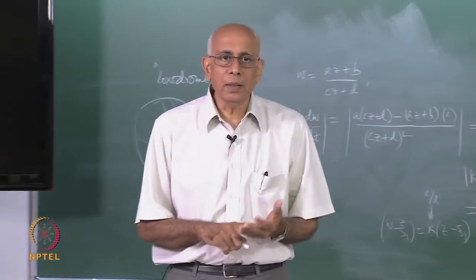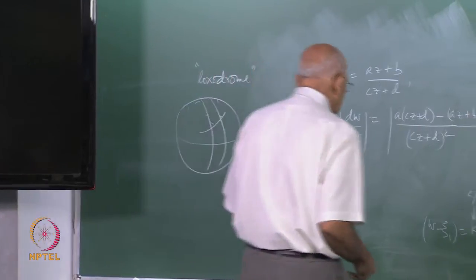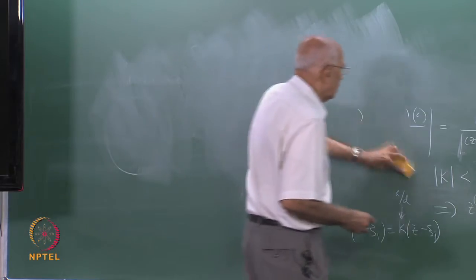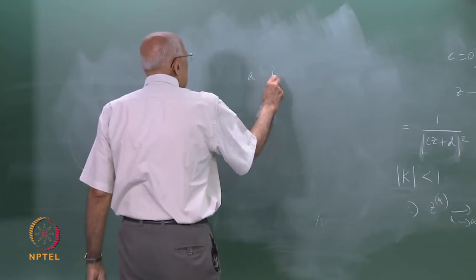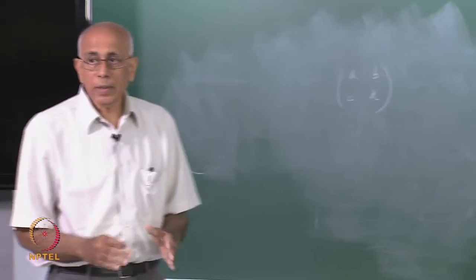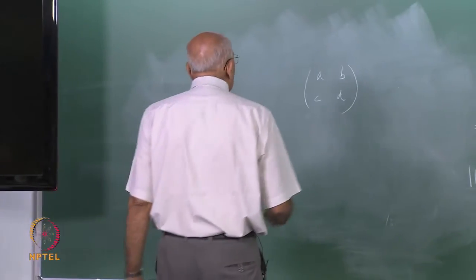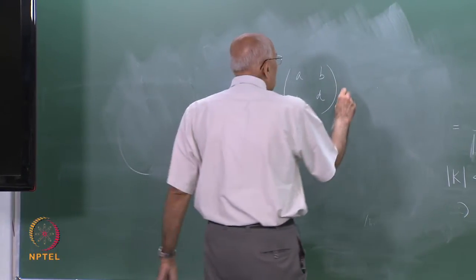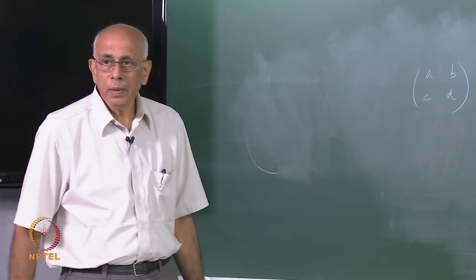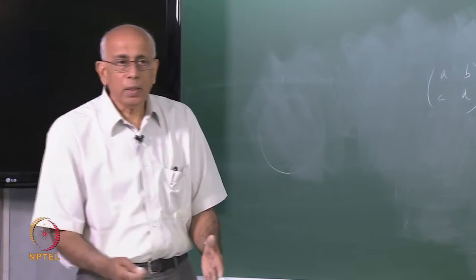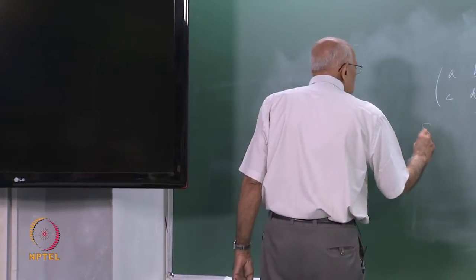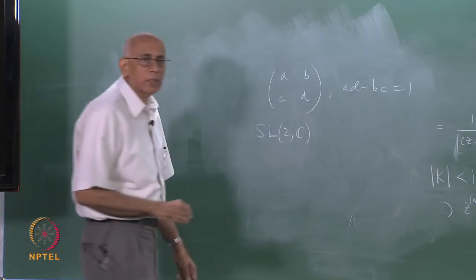Now let me describe the group-theoretic connection. Consider the set of 2×2 matrices [a,b;c,d] with complex entries satisfying ad - bc = 1, under matrix multiplication. All such matrices form a group because they are non-singular and have inverses; the product of any two such matrices is again such a matrix since det(AB) = det(A)·det(B). This group is called the special linear group SL(2,C).